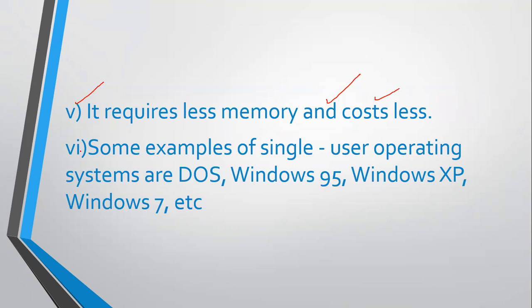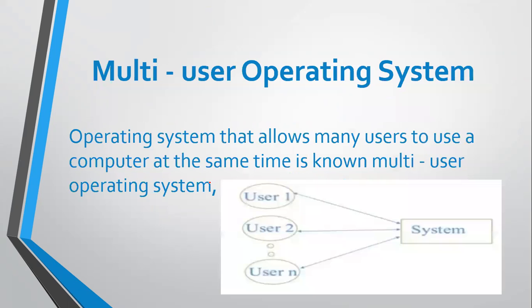Some examples of single-user operating systems are DOS (Disk Operating System), Windows 95, Windows XP, Windows 7, and Windows 10. All Windows operating systems are examples of single-user operating systems, and DOS is also a single-user operating system.